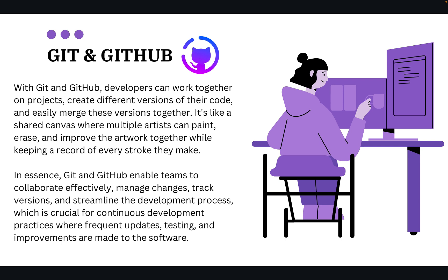If you are using a version control system and versioning your code, you need to know which version of the build was working fine and which was not. You can simply roll back your code to the previous version. Using version numbers, we can roll back to the specific version that was working — that's why we need version numbers for every new release.